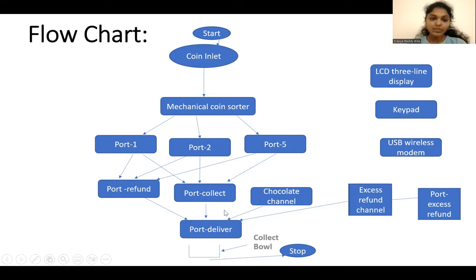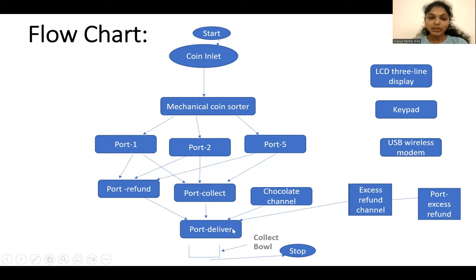The machine has an LCD screen, keypad, and touchscreen at the right-hand bottom side. The ACVM has a collection tray where chocolates and excess amount can be collected. It should also be possible to reprogram the code in the system ROM or flash memory when the price of the chocolate increases, or the message or menu needs to be changed, or machine features change.